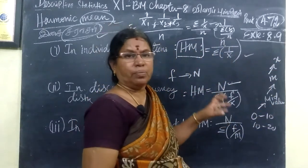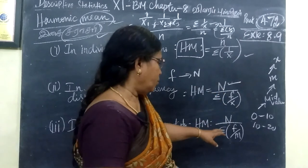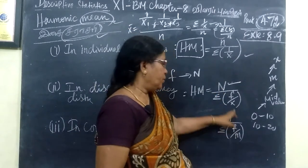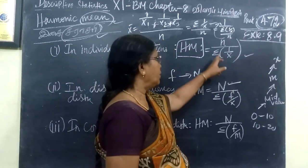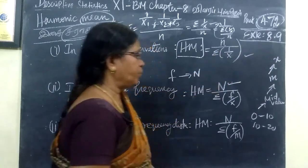But x to the mid value is m. So this is f by m. This is f by x. Then this is 1 by x. And we do the problem now.